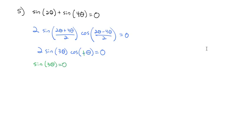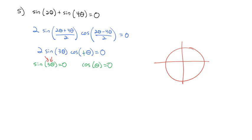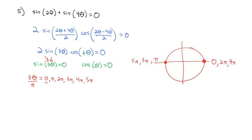Setting each factor to zero: sin(3θ) = 0 and cosθ = 0. Because we have sin(3θ), the factor of 3 means we need to go around the circle 3 times. So 3θ = 0, π, 2π, 3π, 4π, 5π. Dividing all by 3 gives our first set of answers: θ = 0, π/3, 2π/3, π, 4π/3, and 5π/3. From cosθ = 0, the x-coordinate is 0 at the top and bottom: π/2 and 3π/2.